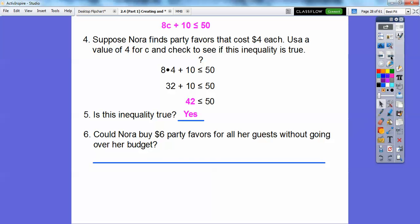So could Nora buy $6 party favors for all her guests without going over? We're going to put in 6 right here. 8 times 6 is going to be 48, and 48 plus 10 is 58, which is over the budget. And so no, Nora couldn't buy $6 party favors because $58 is not less than or equal to $50 right there.